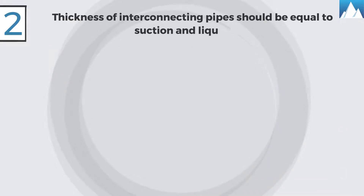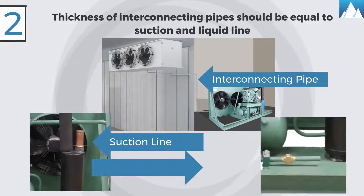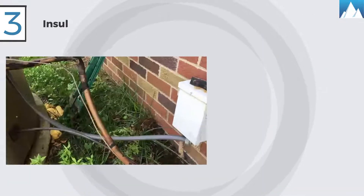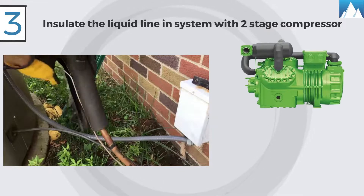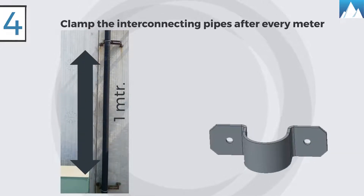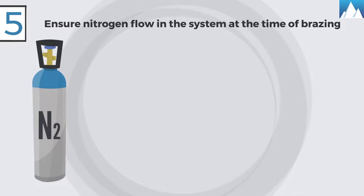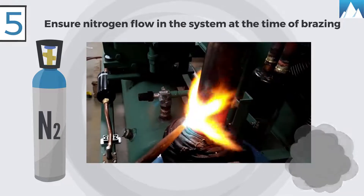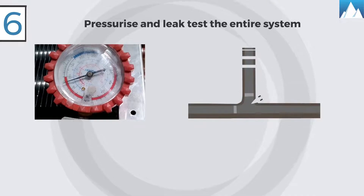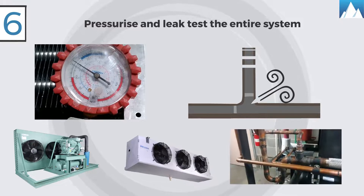Installation procedure: One, avoid material entering into the system while cutting tubes. Two, the pipe thickness of interconnecting pipes should be equal to the condensing unit suction and liquid line. Three, insulate the liquid line if there is a two-stage compressor in the condensing unit. Four, clamp the interconnecting pipes at a distance of every one meter. Five, ensure nitrogen flow in the system at the time of brazing to avoid deposit of carbon inside the pipeline.